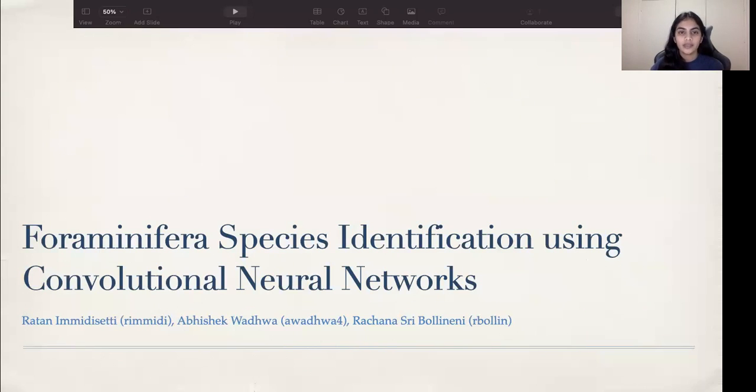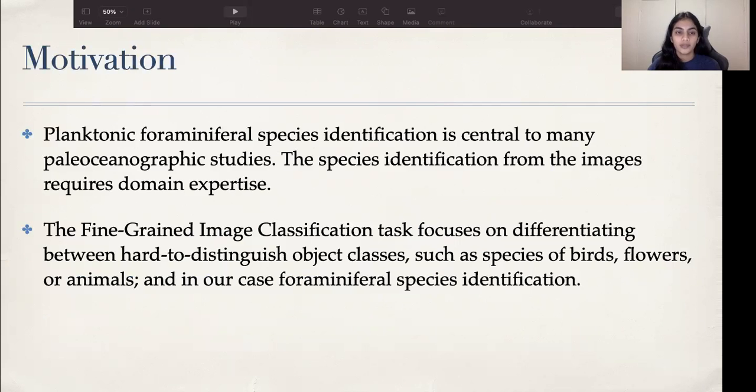Our team, Team 30, worked on a project for foraminiferal species identification using convolutional neural networks. We picked this project because planktonic foraminiferal species identification is central to many paleoceanographic studies. The species identification from the images requires domain expertise. With the advent of neural networks for image recognition, human level accuracy is being achieved in various visual recognition tasks.